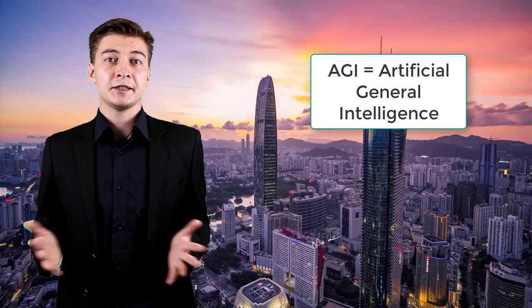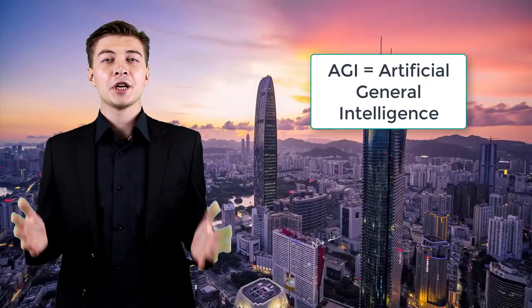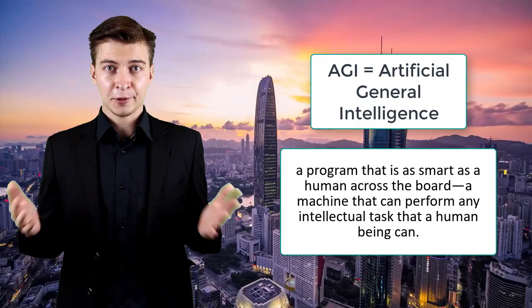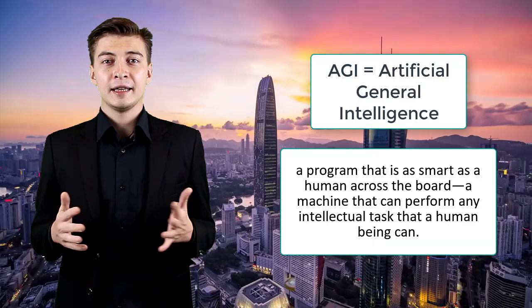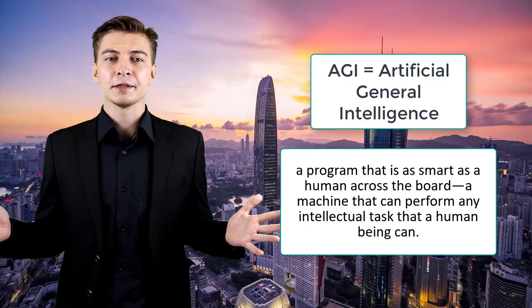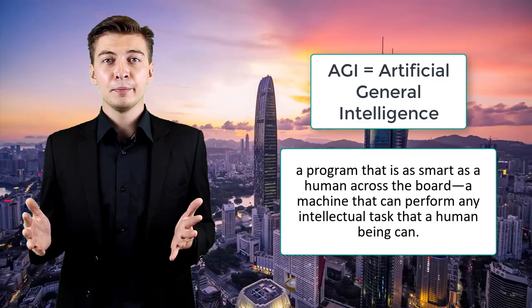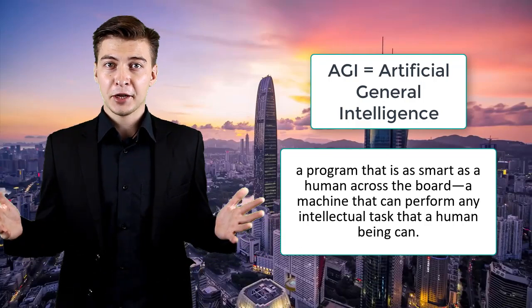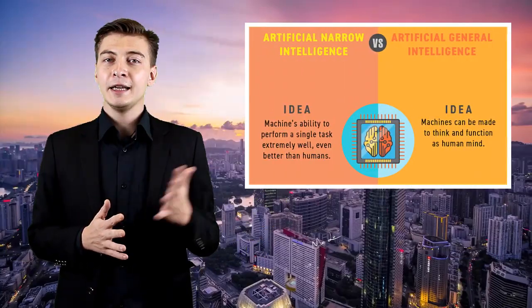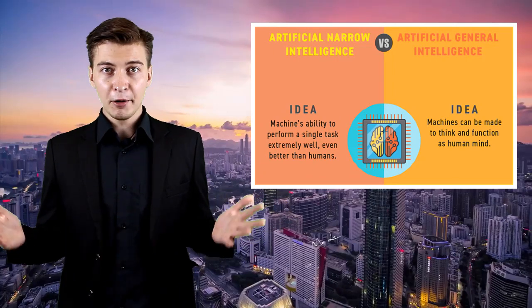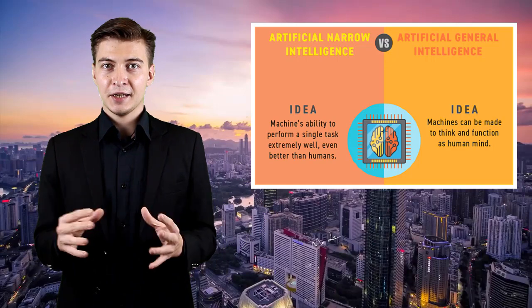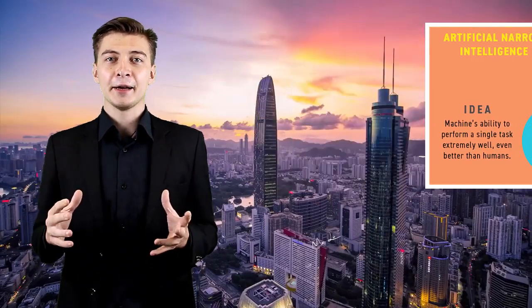AGI stands for artificial general intelligence and is defined as a program that is as smart as a human across the board — a machine that can perform any intellectual task a human being can. It is different from artificial narrow intelligence, or ANI, which specializes in one narrow area.